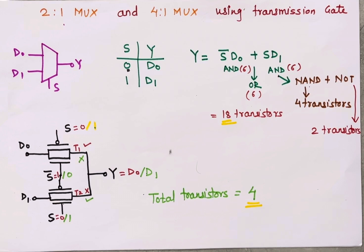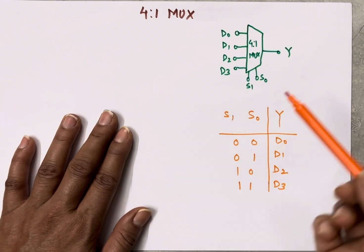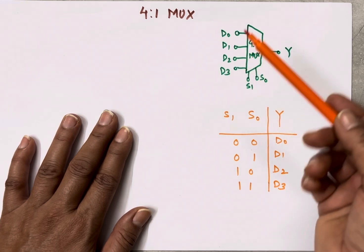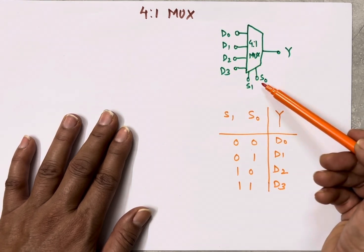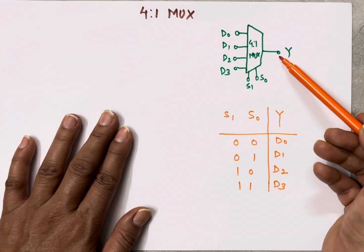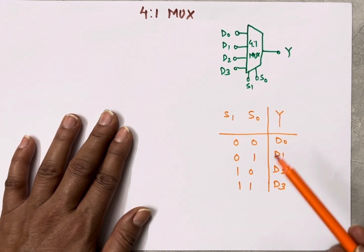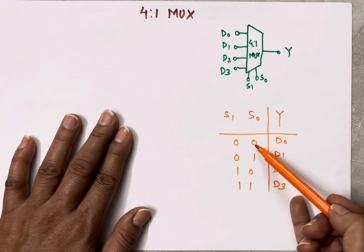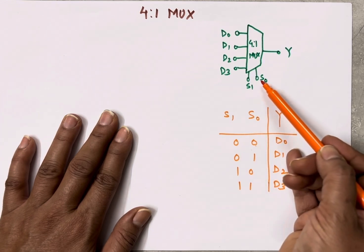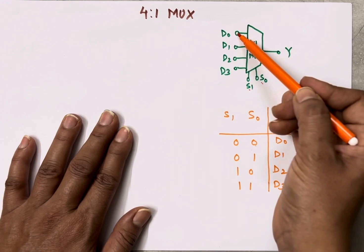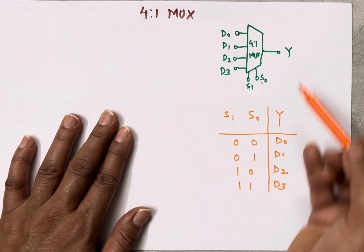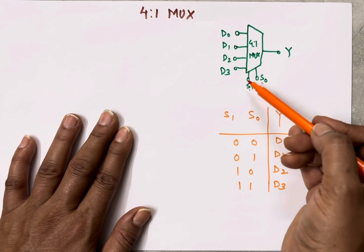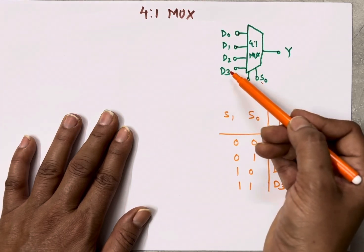Now let's see how to implement a 4-to-1 multiplexer. In a 4-to-1 multiplexer we have 4 inputs D0, D1, D2, D3, two select inputs S0 and S1, and 1 output Y. The truth table: when S1S0 is 00 it selects D0; for 01 it selects D1; for 10 it selects D2; and for 11 it selects D3.